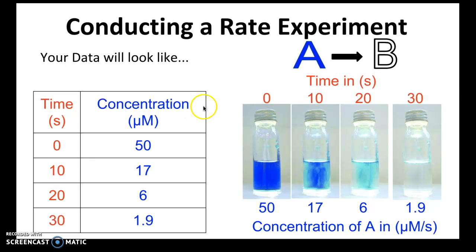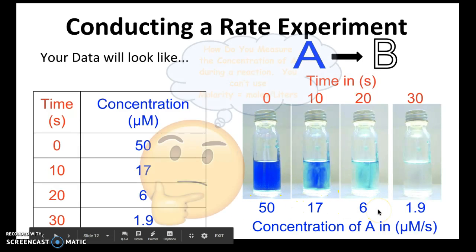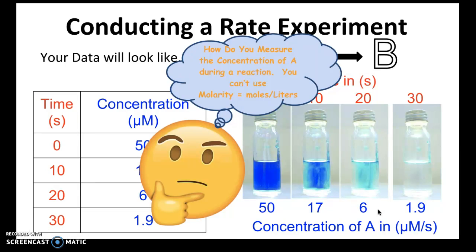You might be thinking: I could easily measure concentrations of A at various times, but how exactly do I get those concentration values? Concentration equals moles over liters — molarity equals moles over liters — but how would you get the moles of A when it's changing over time and you don't know the rate yet? What exactly do we do?